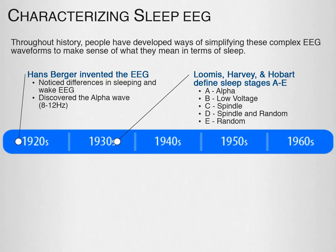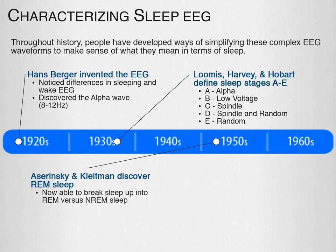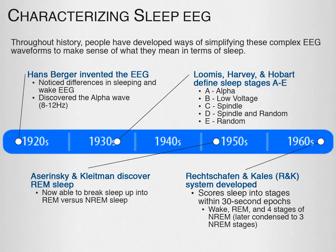In the 1950s, rapid eye movement or REM sleep was discovered by Aserinsky and Kleitman, presenting a new way of looking at sleep — breaking it into REM versus non-REM. In 1968, the Rechtschaffen and Kales system, now called the R&K system, was developed. This broke sleep into 30-second epochs of wake, REM, and four stages of non-REM, later condensed to three stages.